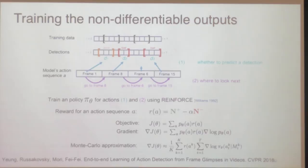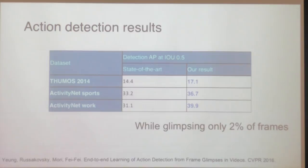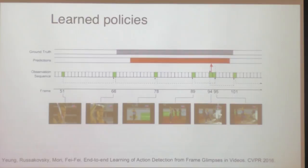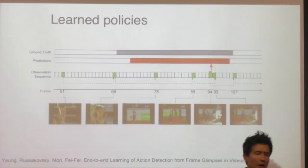The exciting thing is that you can get really good quality action detection results. We measure average precisions at a particular threshold for intersection over union, and can get results even better than previous state-of-the-art models using comparable architectures while only glimpsing around 2% of the frames in a video. Some examples of what these policies look like: for finding a javelin throw, the method only looks at a small sequence of frames on the bottom, and at the end outputs a prediction in red for where a javelin throw took place, which matches well to the ground truth.